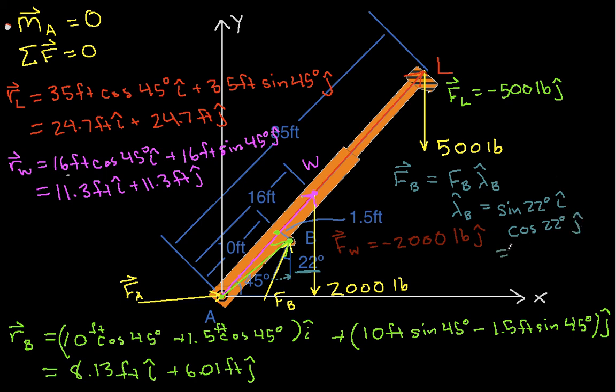Which when you work out the numbers, this is equal to 0.375 i-hat plus 0.927 j-hat. Okay, so we have our relative position vectors and we have our forces. We've got them all set up as vectors. I guess to be complete, we should probably write out that the force at A, the reaction force at A, is going to be its x-component plus its y-component.